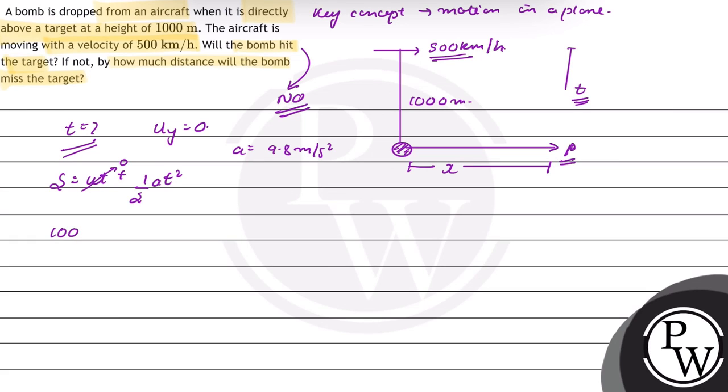Downward direction ko, I have positive considered, so 1000 will be equal to 1 by 2 into 9.8 times square or time will be equal to 14.29 seconds.